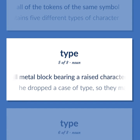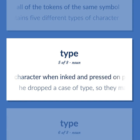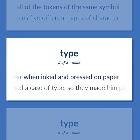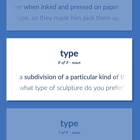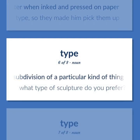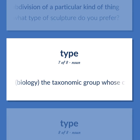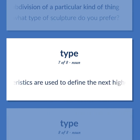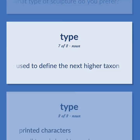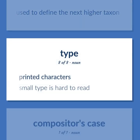A small metal block bearing a raised character on one end; produces a printed character when inked and pressed on paper — he dropped a case of type, so they made him pick them up. A subdivision of a particular kind of thing — what type of sculpture do you prefer? (Biology) The taxonomic group whose characteristics are used to define the next higher taxon. Printed characters — small type is hard to read.